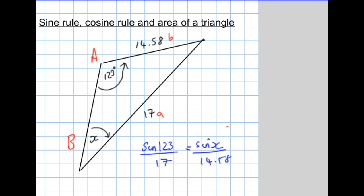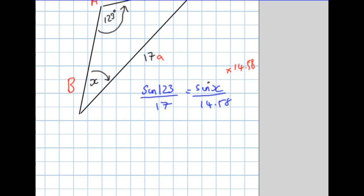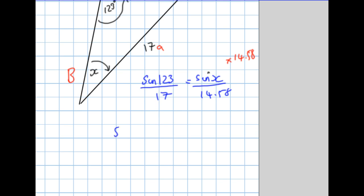Try and make sine X the subject by multiplying by 14.58. So I get sine 123 over 17 times 14.58. That equals the sine of X. And to make X the subject, it's got one more step. It's sine to the minus 1 of all that.